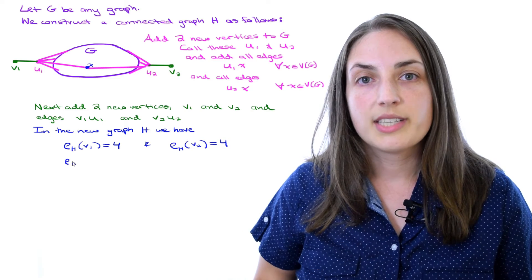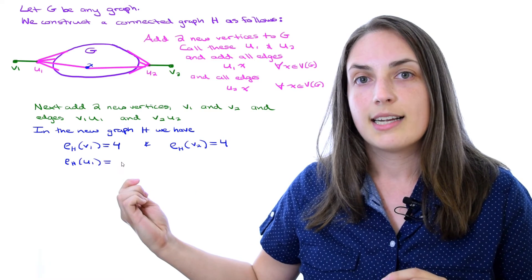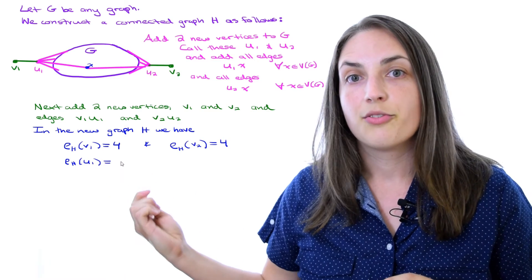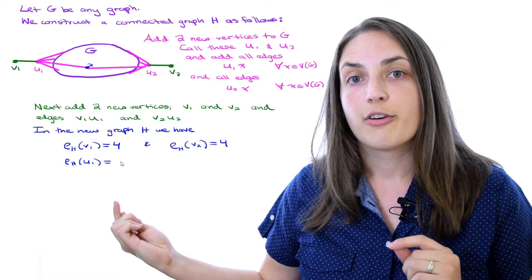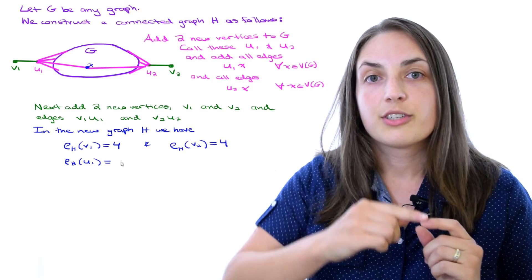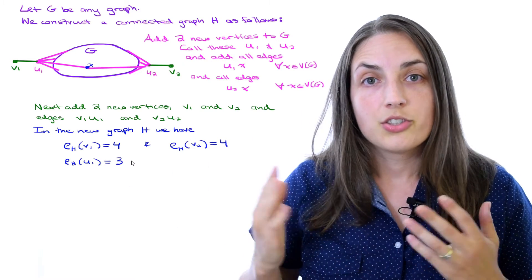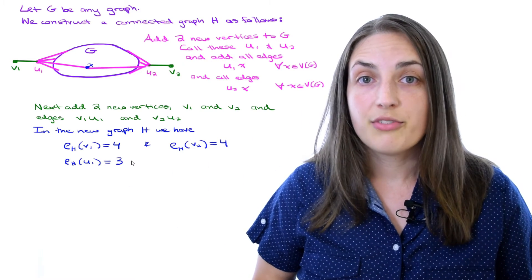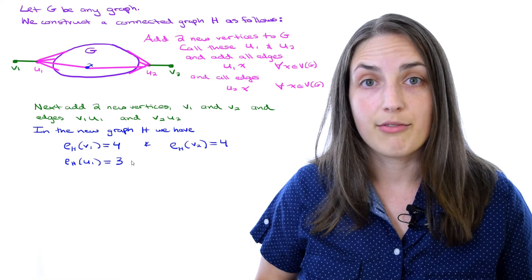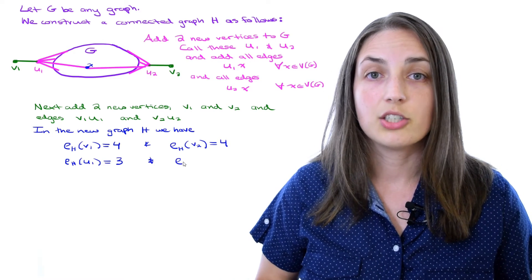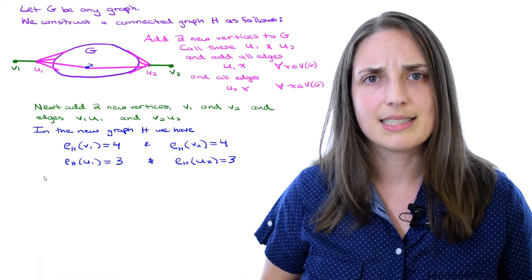Next we look at vertex u1. It has distance one to v1, but the furthest vertex from it is v2, at distance three. So the eccentricity of u1 is three. The same goes for vertex u2 by symmetry.